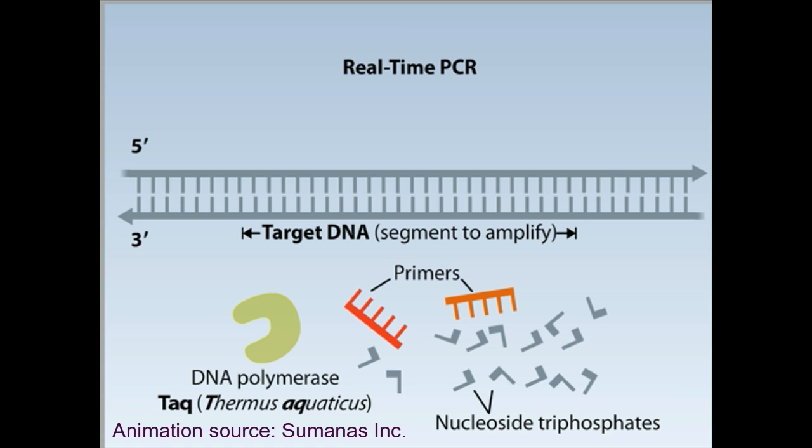The twist in the real-time PCR is this: this technique employs a fluorescent oligonucleotide probe, which allows researchers to monitor the progress of the reaction as it occurs in real-time.